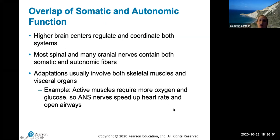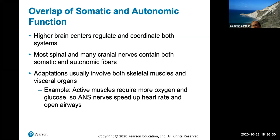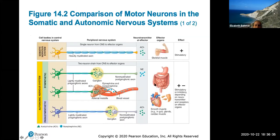There is some overlap between somatic and autonomic function. Higher brain centers regulate and coordinate both. Most spinal and cranial nerves contain both somatic and autonomic fibers, and adaptations usually involve both skeletal muscles and visceral organs. For example, active muscles during exercise require more oxygen and glucose, so the autonomic nervous system works in conjunction, speeding up the heart rate and opening airways to deliver oxygen to skeletal muscles faster.